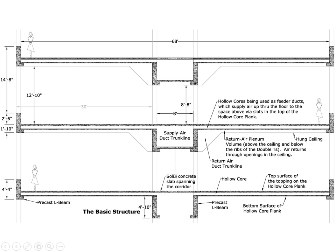In the next diagram, we keep the same basic structure but add a hung ceiling with an interesting shape. It comes off at the level of the bottom of the L beam for a smooth ceiling transition. This plenum volume can accept air and conduct it back to a volume that becomes the return air trunk line — return air flowing east and west. So we have a return air volume or plenum above the ceiling, below the ribs of the hollow core planks. Air returns through openings in the ceiling. In this scheme, we're talking about using the hollow cores as feeder ducts to supply air, going up through the floor to the space above via slots in the top of the hollow core plank.